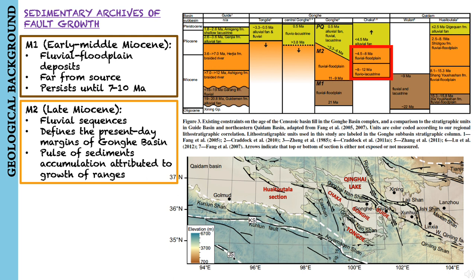Along the northwestern margin of the Chaka Basin, Cenozoic accumulation began locally at around 12 million years ago. From around 8 to 12 million years ago, the units consist of 700 meters of muddy fluvial and lacustrine deposits. Overlying these basal deposits is an 800 meter thick package of fluvial deposits that coarsens upward and dates to around 4.5 to 8 million years ago.